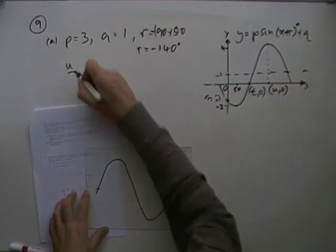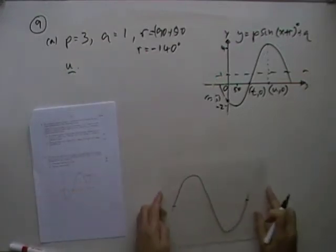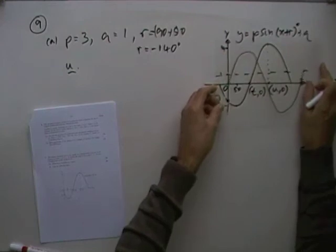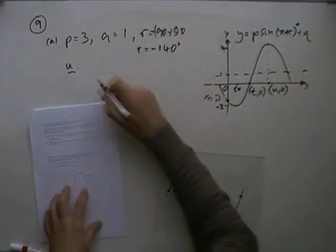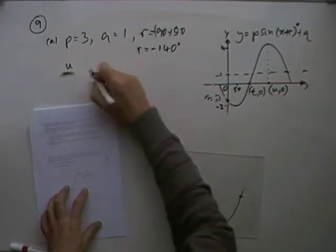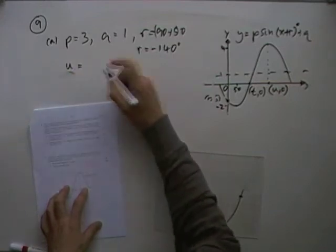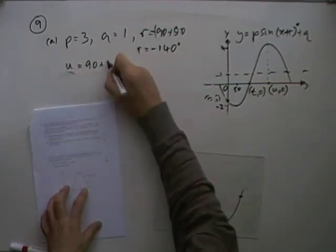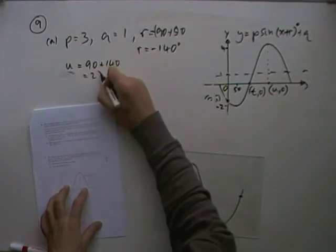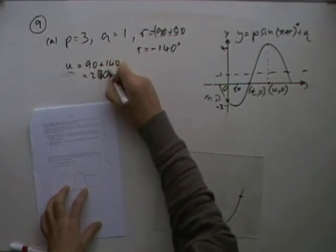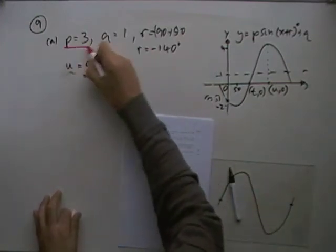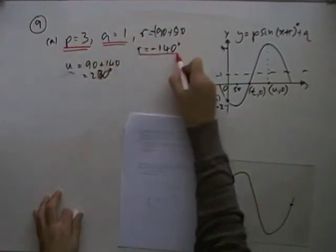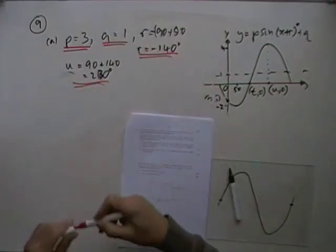Then, the last part, U. Well, U is the top. Now, that top should have been at 90. It's going forward 140. So, U is going to be, it should have been at 90. It's going forward 140, which means it's at 230. So, those are the three parts. The four parts. I'm doing well. For part A.